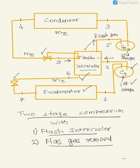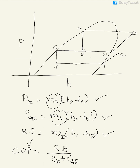The refrigerant emerging out from the evaporator at state 1, as you see here, gets into the first stage. It is compressed in the first stage and then intercooled in the flash intercooler. The refrigerant would then enter compressor 2. This will be more clear when we look at the pH diagram — the compression happens from 1 to 2.